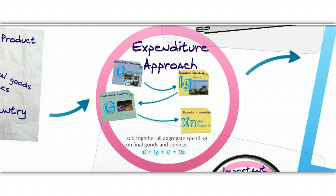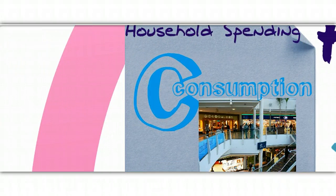Remember, expenditure just means spending. What we're going to do is divide our economy into four basic categories — four sections of the economy that spend money. The first one is our household section — that's you and me, all the households in the country. We're going to look at everything that they buy, and we call this consumption, represented in our formula by C. Everything being bought at a mall, for example, counts as part of the GDP in the consumption category.